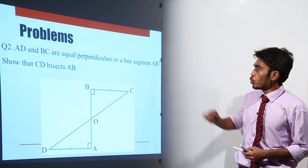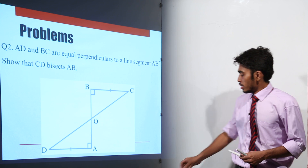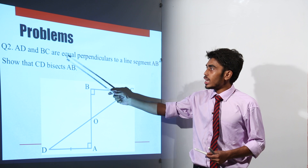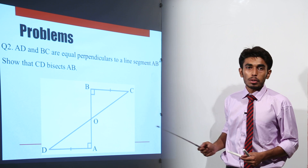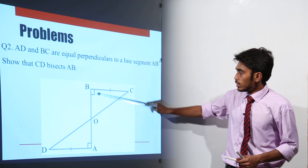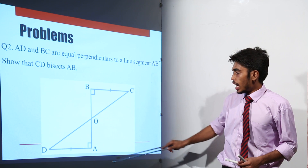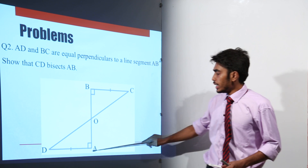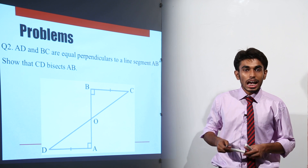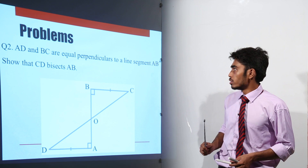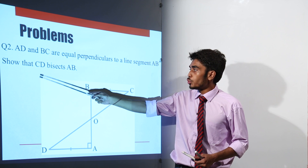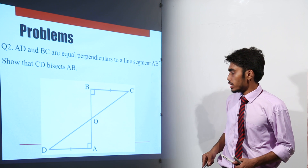Let us do a question. It says AD and BC are equal perpendiculars to a line segment AB. This is a line segment AB, and AD and BC are perpendiculars as well as they are equal to each other. What do we have to show? We have to show that CD bisects AB.